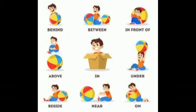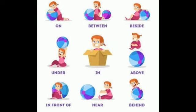So we are using prepositions in different sentences in different ways as per the position shown in the picture. Again you can see here the girl is on the ball. The girl is between the two balls. The girl is sitting beside the ball. The girl is sitting under the ball. Then the girl is jumping above the ball. And the girl is sitting in front of the ball. The girl is sitting near the ball. And the girl is sitting behind the ball. So the words on, between, beside, under, in, above, in front of, near, behind are all called prepositions. These words are used to complete the sentence and to show the position of the noun or pronouns.